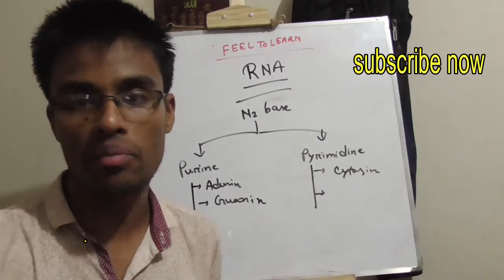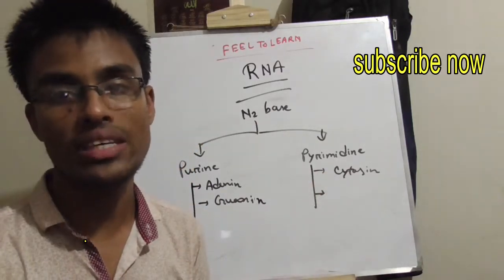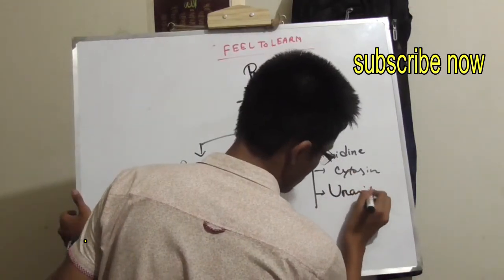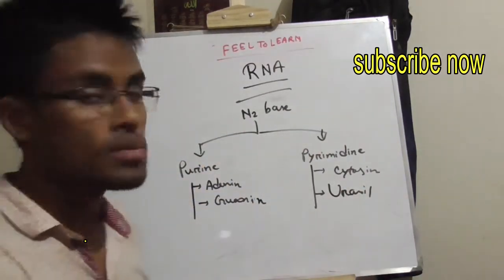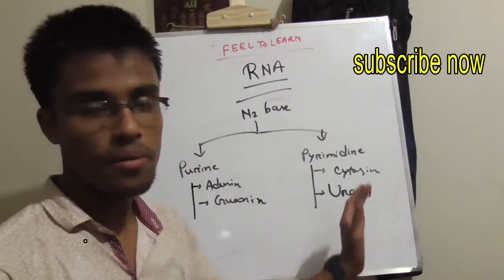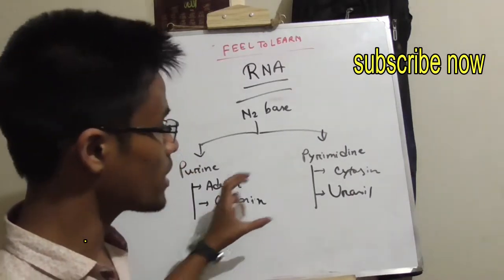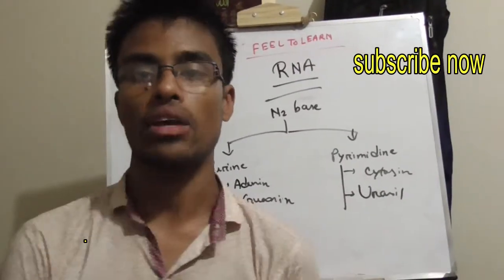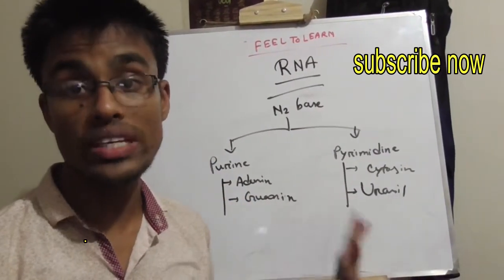In RNA, there is no thymine. It is uracil. We call it nitrogen base. Nitrogen base is purine pyrimidine. Purine is adenine guanine, pyrimidine is cytosine uracil.